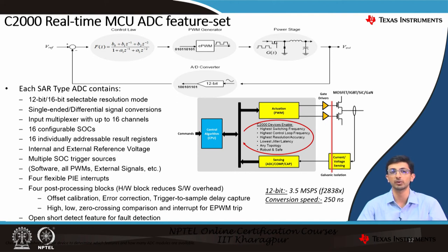There are four post-processing blocks (PPB), which are hardware blocks to reduce software overhead. The PPB block is capable of offset calibration, error correction, trigger-to-sample delay capture, and detection of high, low, and zero-crossing comparisons. It can also generate interrupts for EPWM trip in cases where you want zero-crossing or high-low comparison. Lastly, the ADC has an open-short detect feature to determine whether the configured ADC pin is open or shorted to an external source. For the F2838X device, the 12-bit ADC achieves approximately 3.5 million samples per second with a conversion speed around 250 nanoseconds — values that vary device to device.